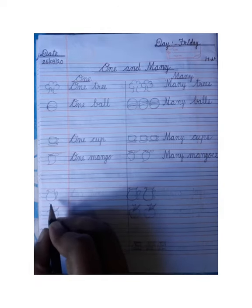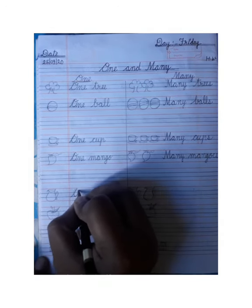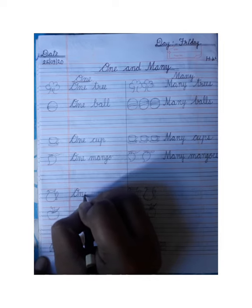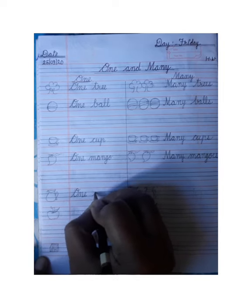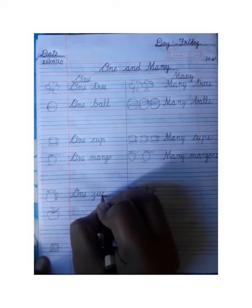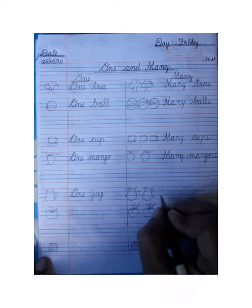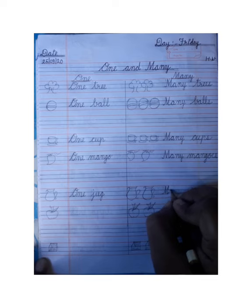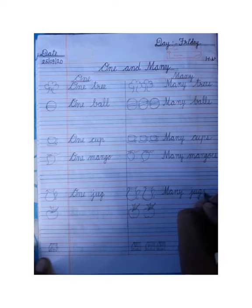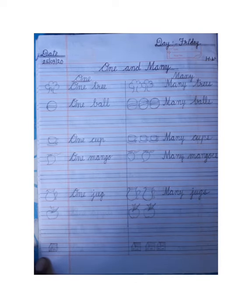Next. This side has one jug, so we will write: One jug, J-U-G. And on this side there are many jugs, so we will write: Many jugs, J-U-G-S.